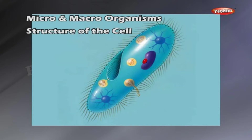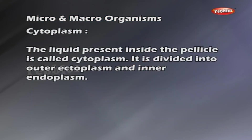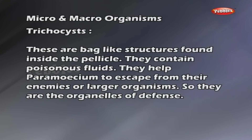The body of the animal is covered by a membrane called the pellicle. The entire body is surrounded by a number of cilia. The cilia are hair-like structures and they are the organelles of locomotion. The functions of cilia are locomotion, food collection, and they act as sense organelles.